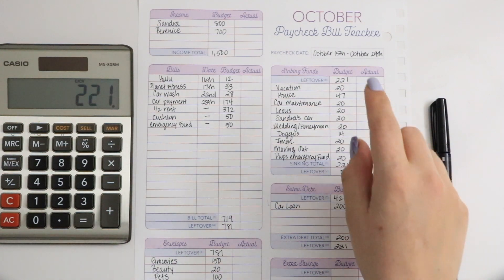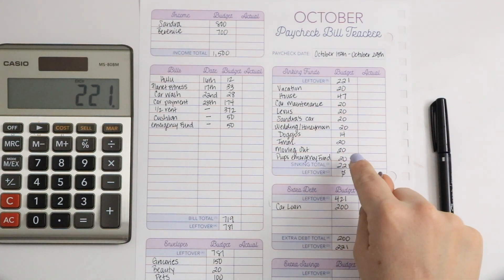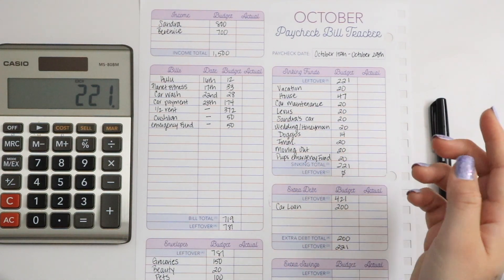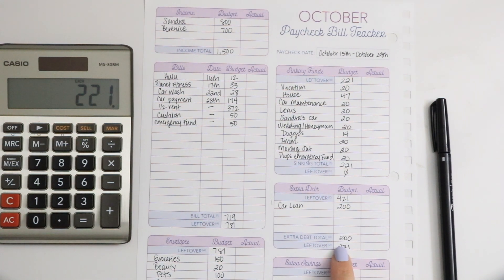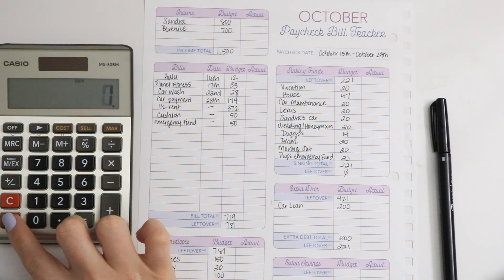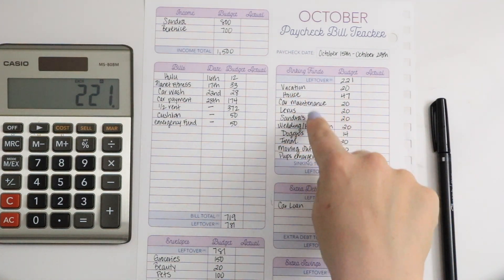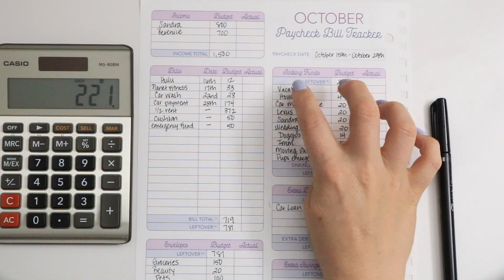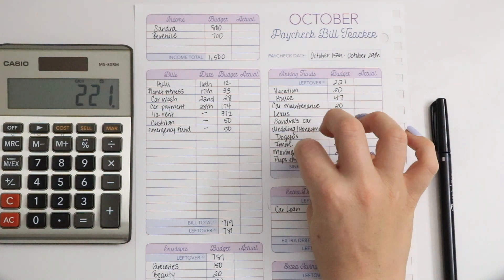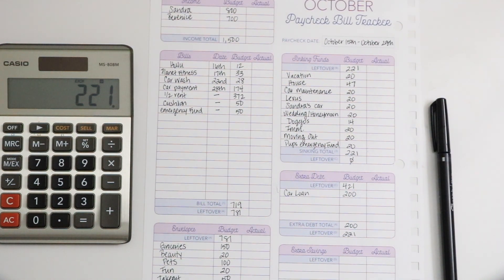As for how I get these totals, what I do is whenever I have my leftover, I do $221 divided by how many sinking funds I have. So this is one, two, three, four, five, six, seven, eight, nine, ten. So that is 10 sinking funds.